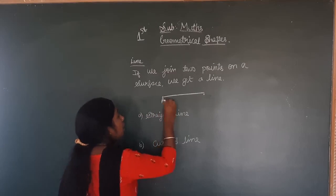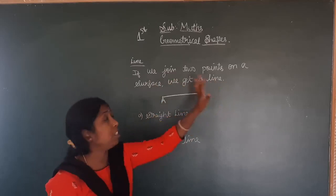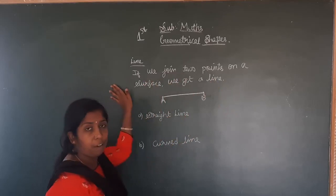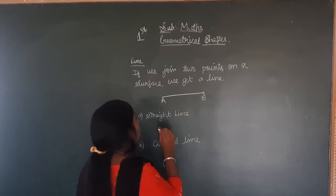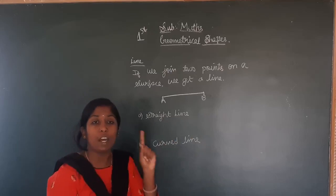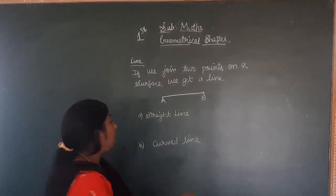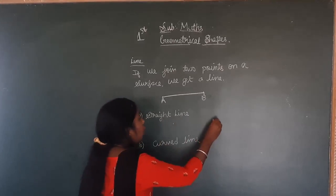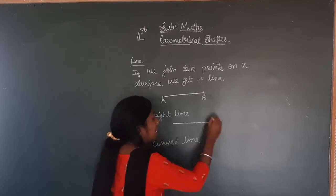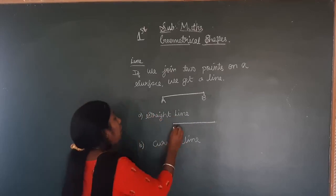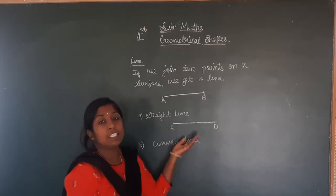Mark as A and B. If we join two points on the surface, we get a line. A line has two types: one is a straight line and one is a curved line. If I join two points tightly, it forms a straight line.